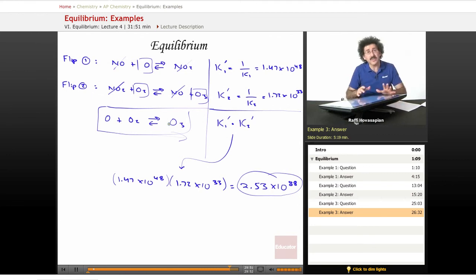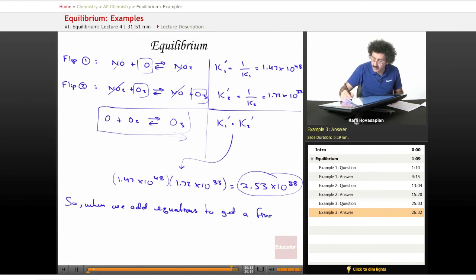So anytime you have a bunch of equations, if you add them together to come up with a final equation, you multiply the equilibrium constants for all of the individual equations. When we add equations to get a final net equation, our final K is equal to K1 times K2 times all the way to KN, if we had N equations. And that's it.